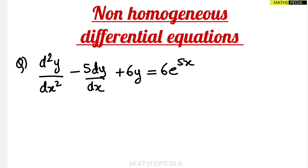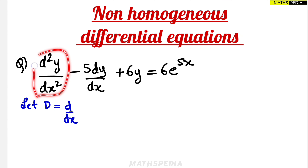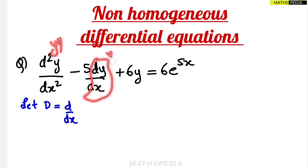The first step is to assume that D is equal to d/dx. In this question they may give directly d²y/dx² or instead write y double-dash, and instead of dy/dx they may write y-dash — both notations are possible.